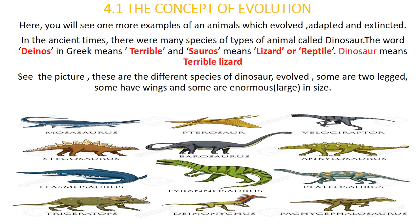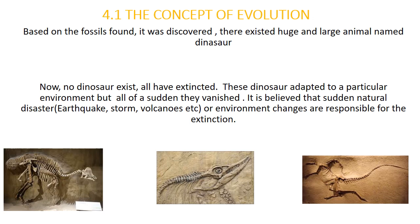Here is one more example of an animal which evolved, adapted, and then went extinct. In ancient times, there were many species of animals called dinosaurs. The word 'dinos' in Greek means terrible and 'saurus' means lizard or reptile, so dinosaur means terrible lizard. Different species of dinosaurs evolved — some were two-legged, some had wings, and some were enormous in size. Based on fossils found, it was discovered that these huge animals existed. Now no dinosaurs exist — all have gone extinct. It is believed that natural disasters such as earthquakes, storms, or volcanoes, or certain environmental changes, are responsible for their extinction.